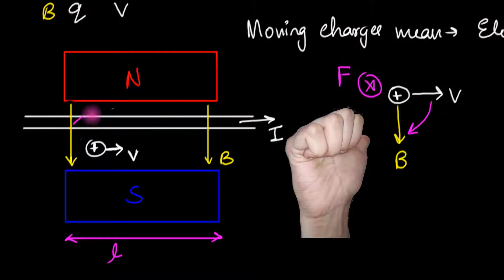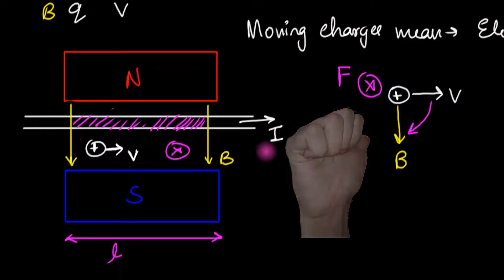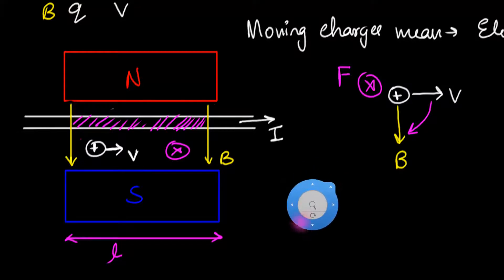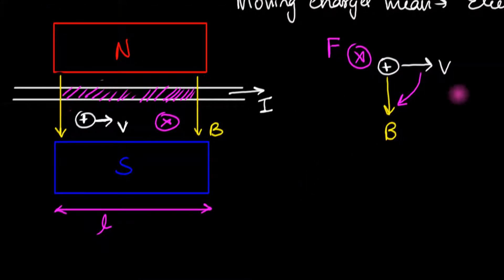And hence this section of the wire which I'm shading now, this entire section of the wire which contains these moving charges, this entire section must experience a force inwards. So the whole wire would get deflected inwards. That's very useful to us because for the first time now, we can actually start pushing wires that carry current just by using magnetic fields. Currents alone can't do that, but magnetic fields can push these current carrying wires.